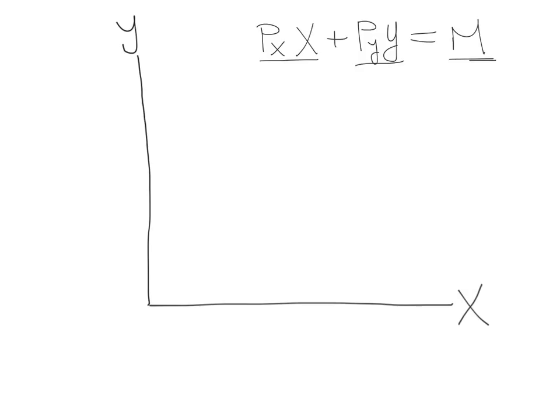Well, what is the most the consumer can buy if he buys only X? Well, that's going to be equal to the amount of money the consumer has divided by the price of X. So if the consumer has $100 and X costs $1, the consumer can consume 100 units of X. If a consumer has $100 and the price of X is $2, the consumer can buy 50 units of X.